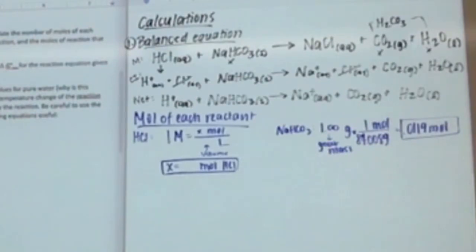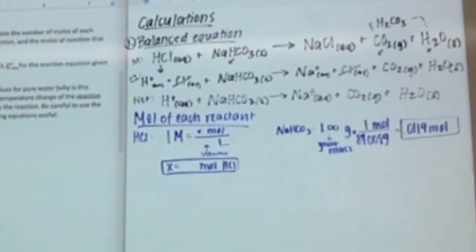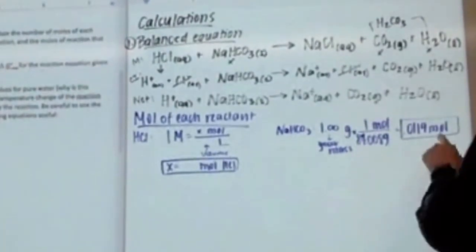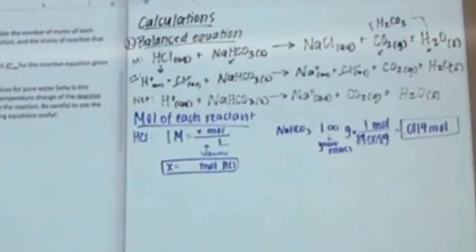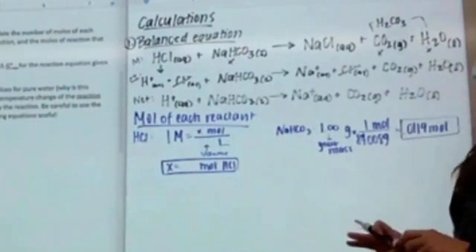If you had two grams, you'd get 0.0238 moles — that's double. So there are our moles of each reactant.